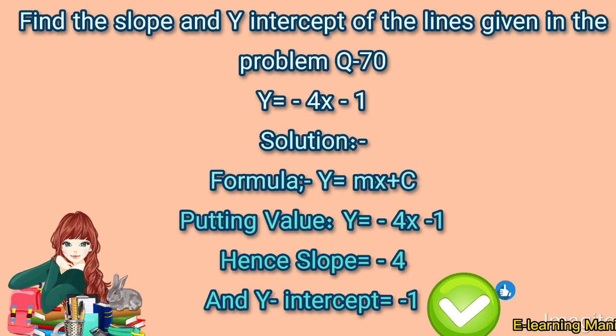And c, which is the y-intercept, is -1. Putting values in the formula: Y = -4X - 1. Hence, slope = -4 and y-intercept = -1. Thanks for watching.